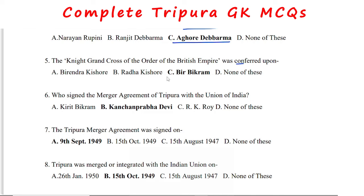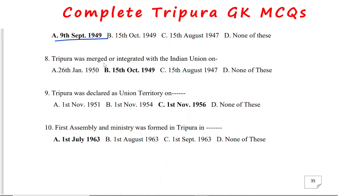The Knight Grand Cross of the Order of the British Empire was conferred upon Maharaja Virbikram Kishore Manika. The merger agreement of Tripura with the Union of India was signed by Kanchan Prabha Debi. The Tripura merger agreement was signed on 9th September 1949. Tripura was merged with the Union of India on 15th October 1949.